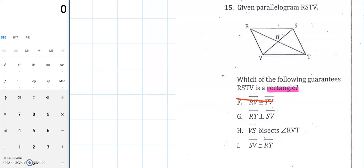Next, RT is perpendicular to SV. RT and SV, those are the diagonals. If they're perpendicular, that's a great property, but it's for a rhombus and a square, but it's not for a rectangle, so G is not going to be our answer either.